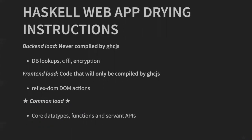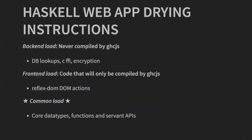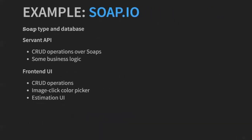To get concrete: Haskell web app driving instructions. Separate your code into three loads. You have your back-end load — all the code that does stuff GHCJS will not be able to compile, like database lookups, functions that make C calls, or encryption. Then there's your front-end load — that's your Reflex DOM code to actually lay out the widgets on the page. You don't need to compile those on the back end. And then there's the common library — this is where most of your code goes. You define all your types and as many functions as you can get to compile there, and then you're serving APIs.